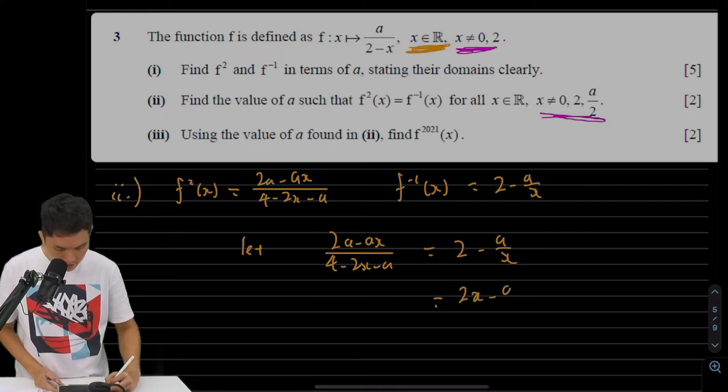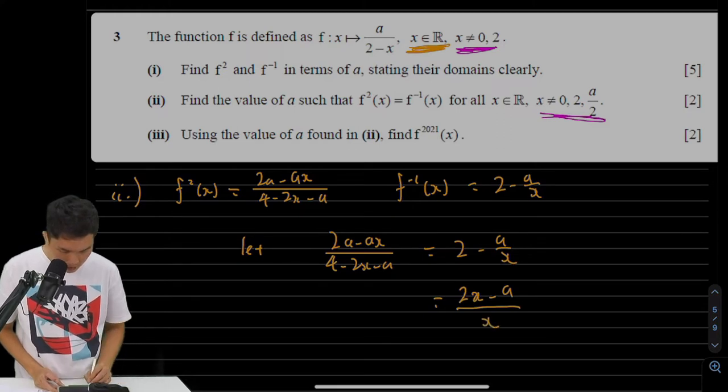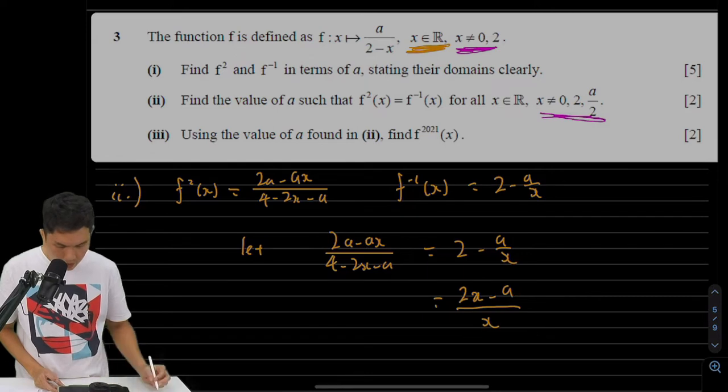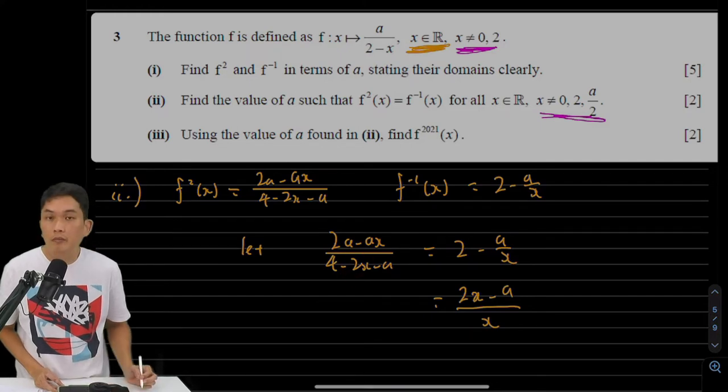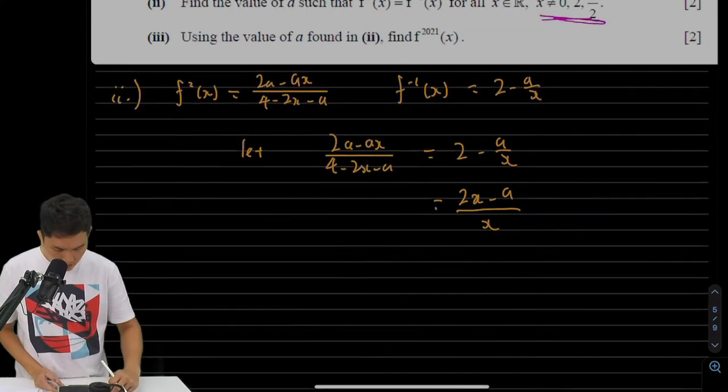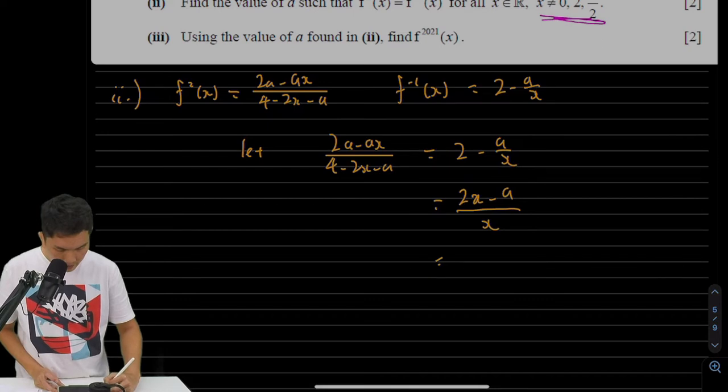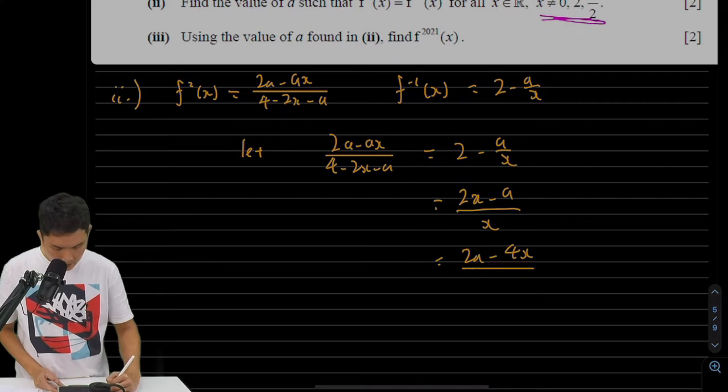So this is 2x minus a over x, which is actually quite similar to 2a minus ax, but I'm going to multiply by a negative 2 to make this denominator negative 2x because I need a negative 2x to sort of appear as well. So multiplying by negative 2, I get 2a minus 4x over negative 2x.